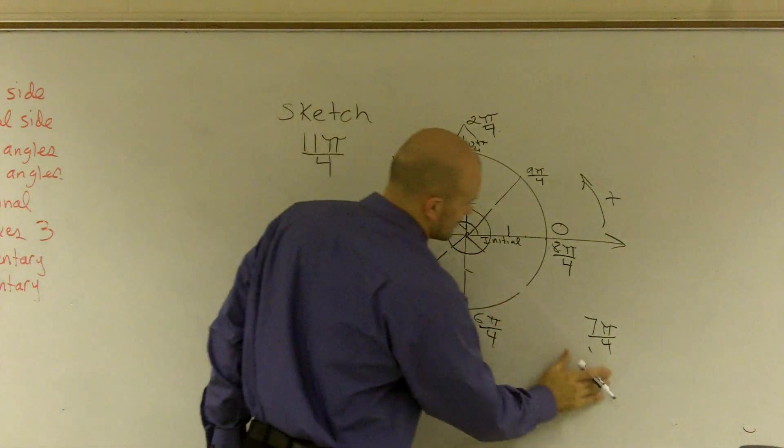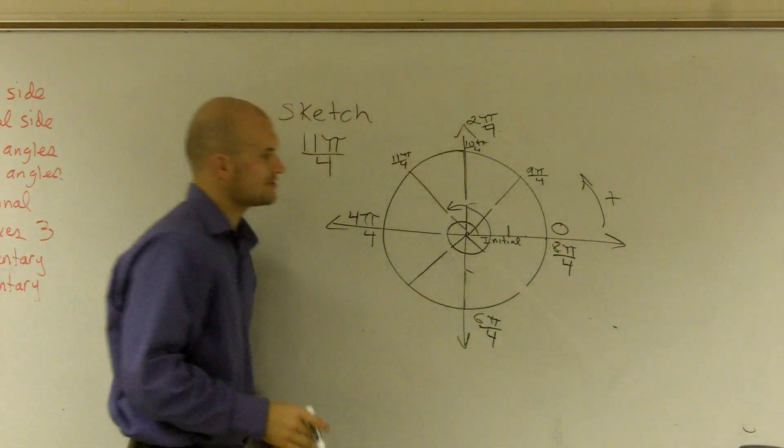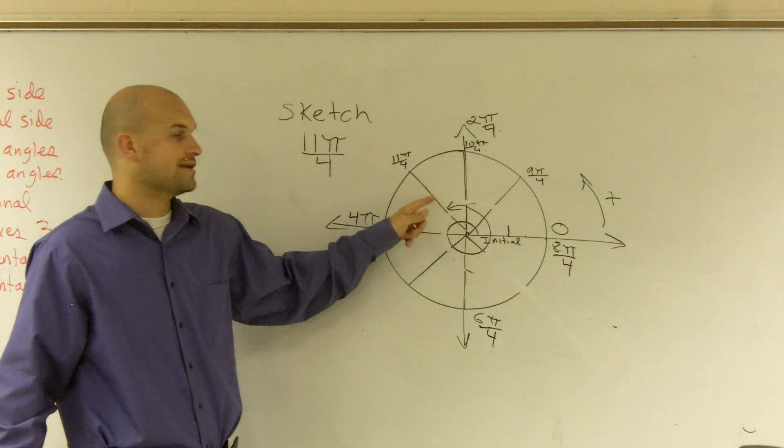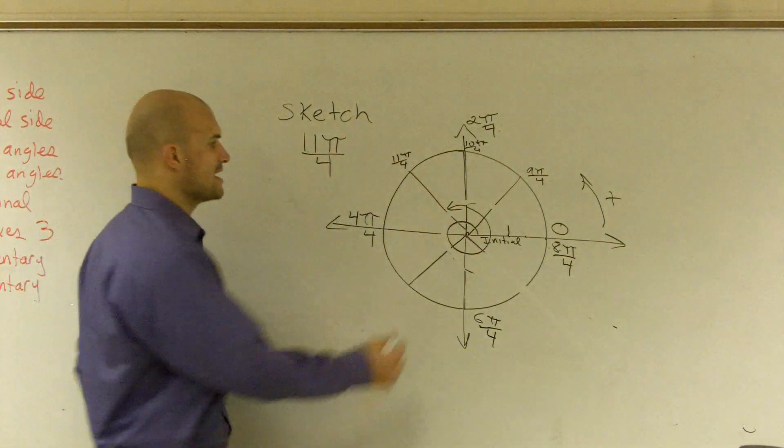All right? So I had to go around the circle once, which is 2π. And then I had to add 3 more π over 4 to get to this angle right here.